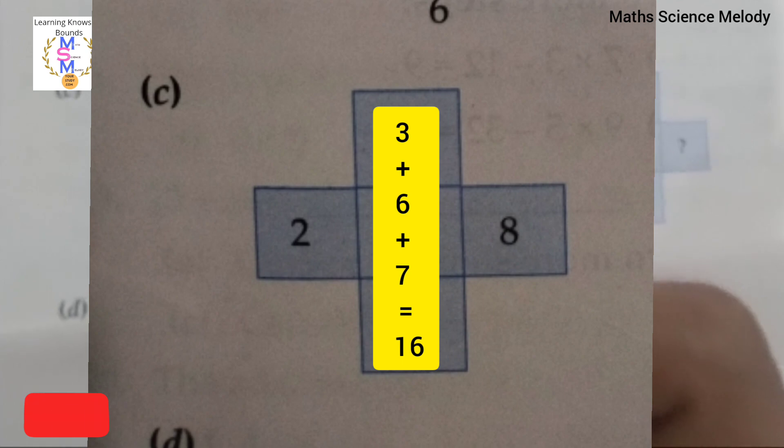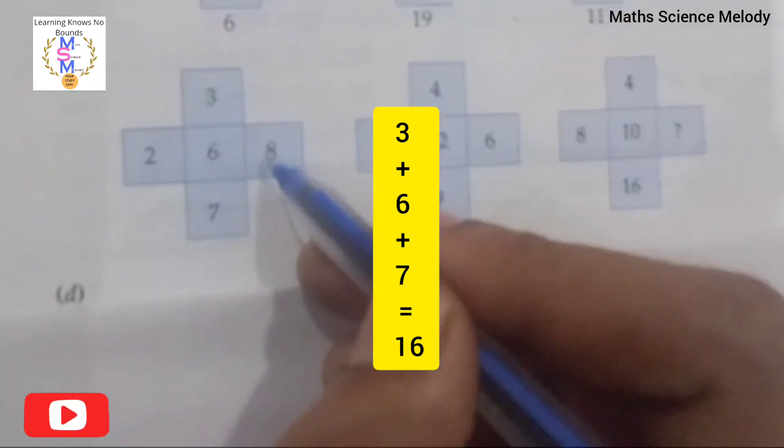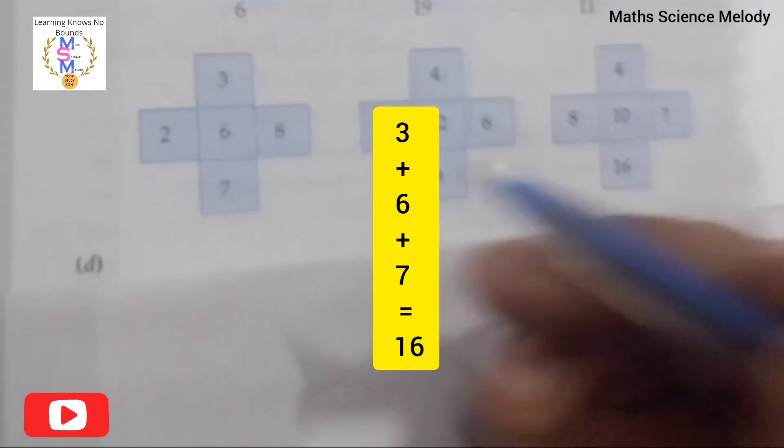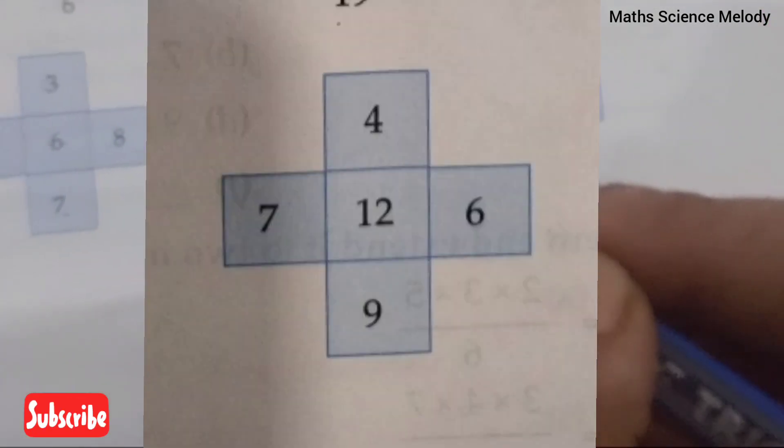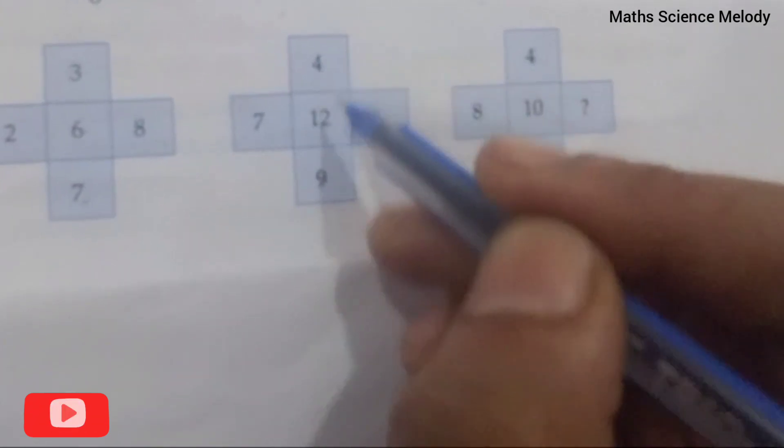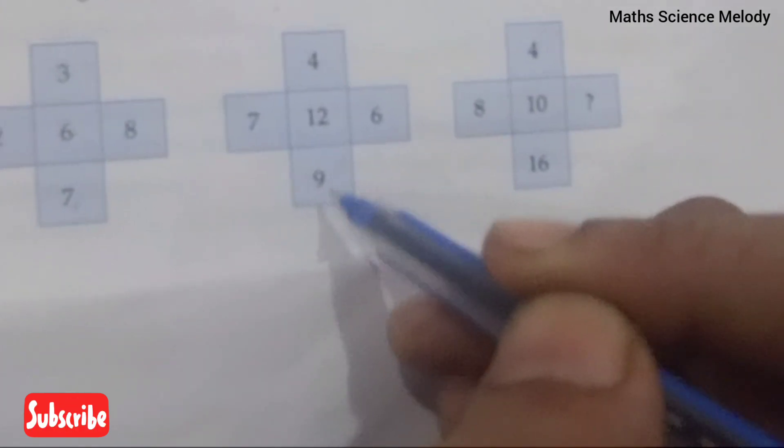Same in the next figure, the sum you get from the horizontal number arrangement and the vertical number arrangement should be the same. The sum of horizontal numbers and vertical numbers will be equal.